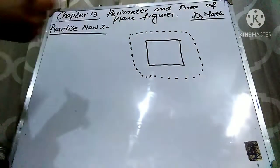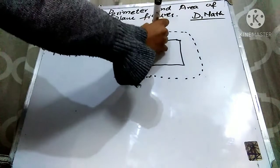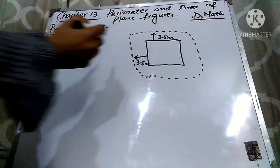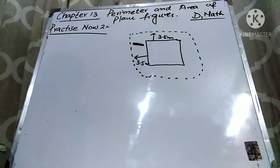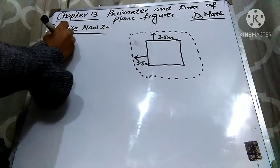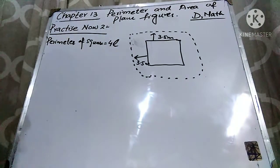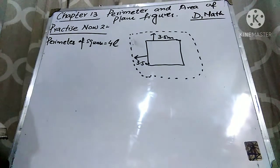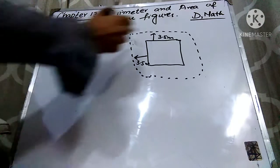The field is surrounded by a path, and the width of that path is 3.5 meters. Since this is a square, the width on all sides is also 3.5 meters. We need to find the area of the path. Basically, we have to find the area of the whole outer figure and subtract the area of the inner field. The perimeter is given, so first we find the side length. The formula for the perimeter of a square is 4L.